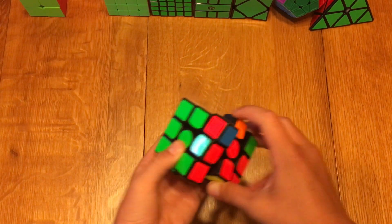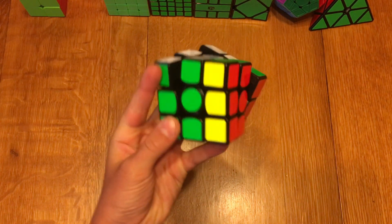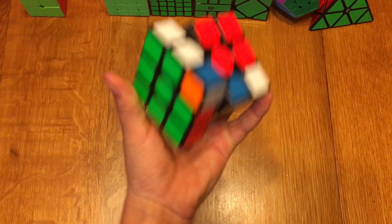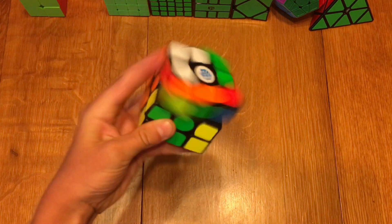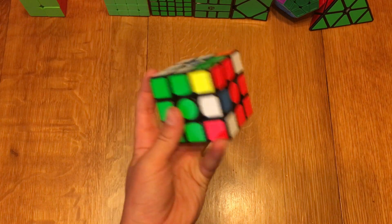So for 3x3 one-handed, I'm also using the GAN 356 Air SM. I'm hoping for a sub-1 minute average and a sub-55 single.